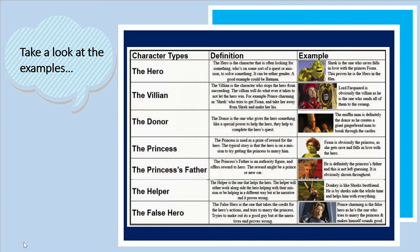The hero is considered the round character in the story — a character often looking for something, on some sort of quest or mission. In Shrek, he is the one who saves and falls in love with Princess Fiona. The villain, also a round character, stops the hero from succeeding. In Shrek, Lord Farquaad is the villain as he sends them all to the swamp. The other flat characters in the story are the helpers and the princess's father.